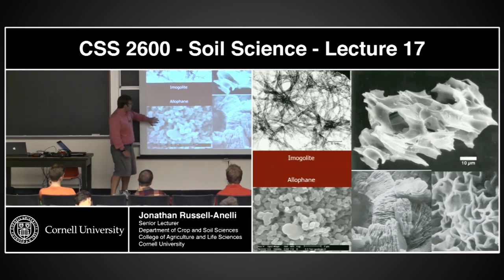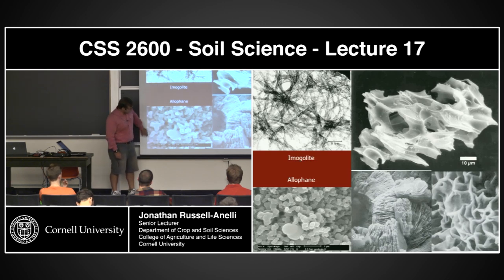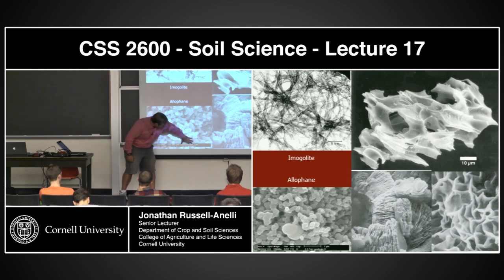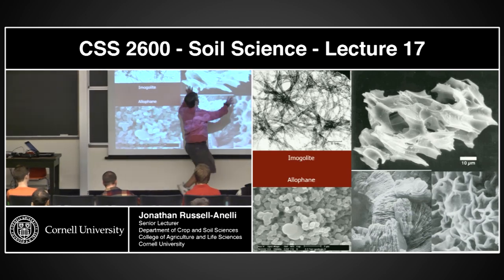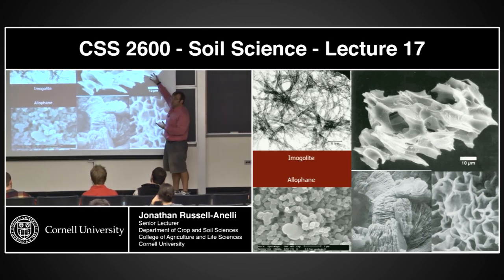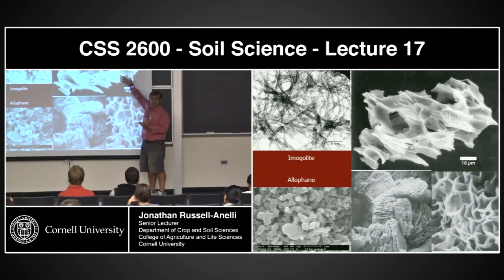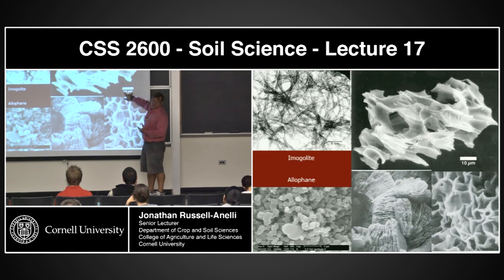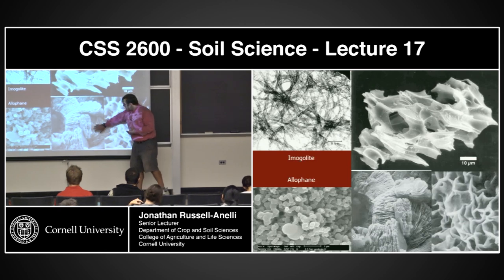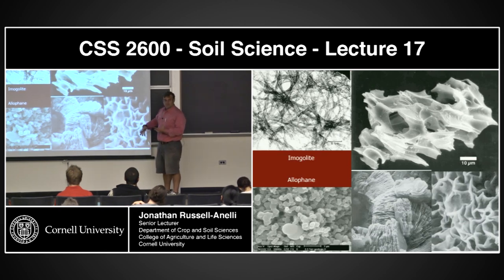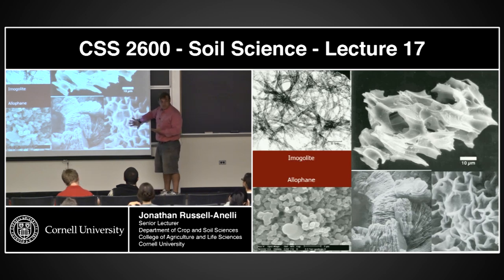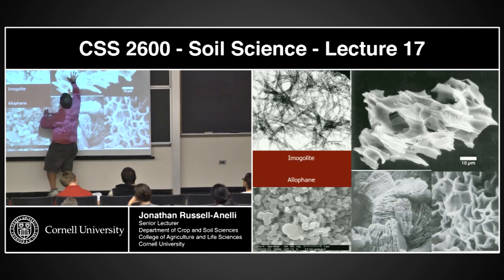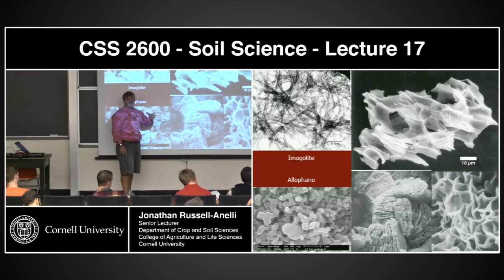Imogolite tends to form on the exterior of these fragments, in an environment with lower pH and lower concentrations of silica, and tends to have a thread-like shape. Here are some pictures — here's the allophane, the spheroidal stuff forming inside; here's the imogolite. This is 2 microns here to give you scale. You can see this entire particle — these amorphous materials. Here's the scale at 10 microns. I also put in vermiculite and smectite for comparison. These are phyllosilicates; these are the amorphous materials. You can see they physically look different.